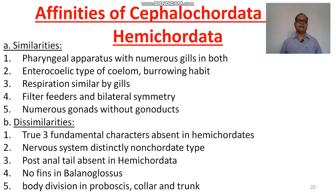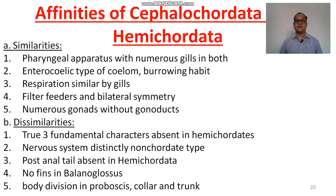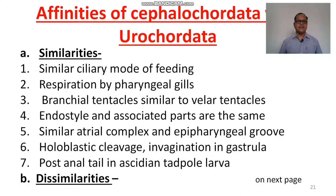Affinities of Cephalochordata with Hemichordata. Similarities: pharyngeal apparatus with numerous gills in both; enterocoelic type of coelome; burrowing habit; respiration by gills; filter feeding by cilia and bilateral symmetry; numerous gonads without gonoduct. Dissimilarities: three fundamental chordate characters absent in hemichordates; nervous system distinctly non-chordate type; post-anal tail absent in Hemichordata; no fins in Balanoglossus; body division into proboscis, collar and trunk.